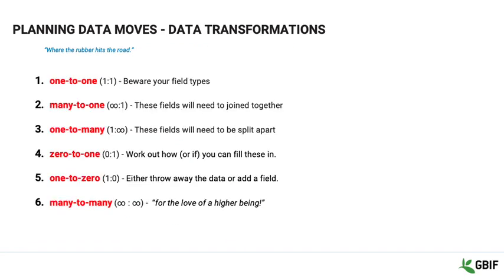Each of the relationship types has its own nuances as to how you are going to have to handle them. One-to-one: beware your field types — if they are not the same, you will need to do some manipulation. Many-to-one: these fields will need to be joined together to go into the field. One-to-many: these fields will need to be split apart and put into different fields. Zero-to-one: work out how or if you can even fill these in — is the data mixed into a notes field, and if so, how do you get it out? One-to-zero: either throw away the data or add a field — you might not even have a home in the other dataset, so can you create a new field? Many-to-many: this usually means that your incoming data is very messy and will take time to clean before you can map it.